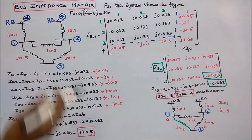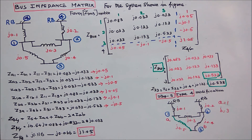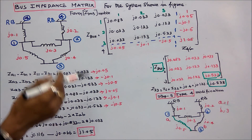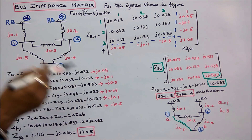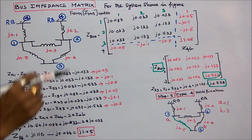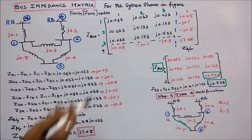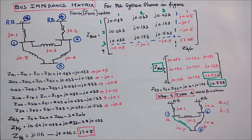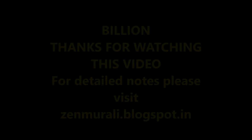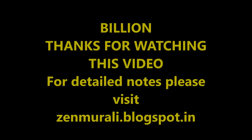That three by three matrix is the original bus impedance matrix of the system. Please work out and find the elements in the three by three matrix. With this I conclude my lecture. Thanks for listening.